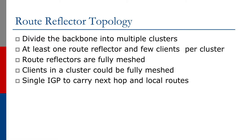Since we're only looking at IBGP, we don't touch ISIS, OSPF, or the IGP of choice. The IGP is unchanged — no modifications are needed there. It still carries the next-hop address information and any local routes needed for the network.